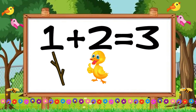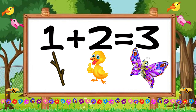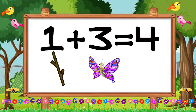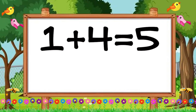Three like a butterfly. And we're going to add one plus three. One like a stick plus three like a butterfly is equal to four. Four like a chair.